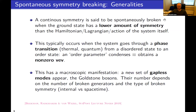Typically this happens when the system goes through a phase transition — either as a function of temperature, a thermal phase transition, or as a function of some other parameter like magnetic fields or pressure, which we call a quantum phase transition. The system goes from a disordered state to an ordered state, where the symmetry is spontaneously broken because some order parameter condenses and obtains a non-zero vacuum expectation value. This has a very important macroscopic manifestation: a new set of gapless modes appear — the Goldstone bosons — whose number depends on the number of broken generators and the type of broken symmetry.